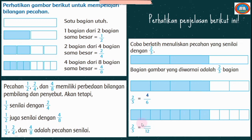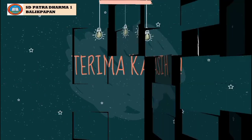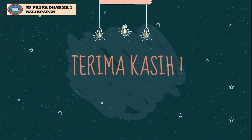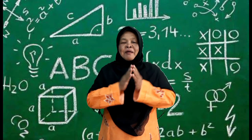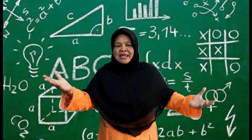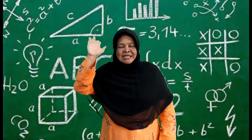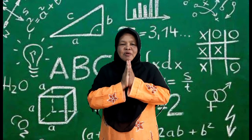Pembilang belum diketahui dan penyebutnya adalah 12. Tiga dikali berapa hasilnya 12? Ya, 3 × 4 = 12. Maka pembilang di atas juga dikalikan 4: 2 × 4 = 8. Maka pecahan yang senilai dengan 2/3 adalah 8/12. Baik, cukup sekian pembelajaran kita hari ini. Terima kasih, alhamdulillah pelajaran hari ini sudah selesai. Semoga anak-anak dapat memahami penjelasan dari Ibu. Sampai bertemu di pembelajaran berikutnya. Wassalamualaikum warahmatullahi wabarakatuh.